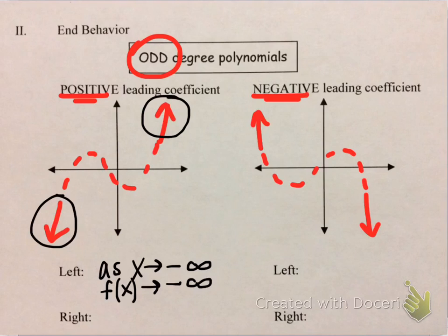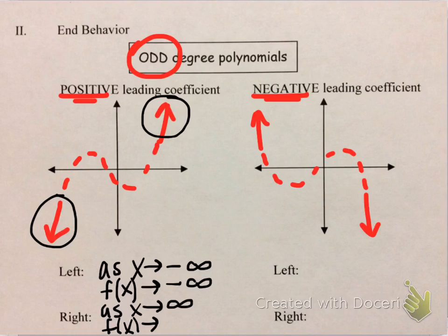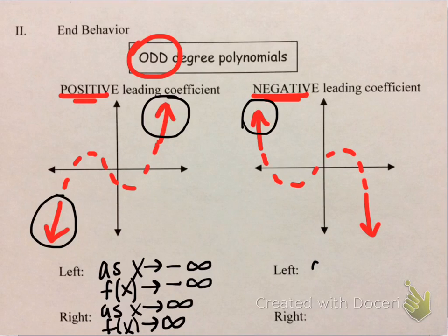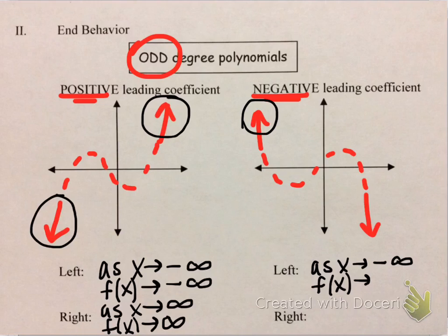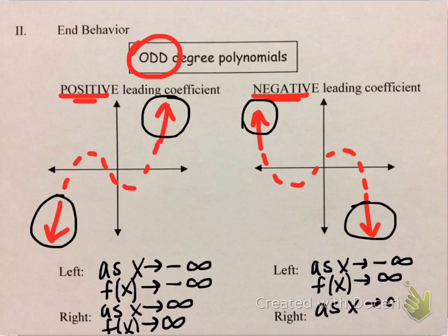For the right behavior, the graph is pointing up, so as x approaches positive infinity, f of x also approaches positive infinity. That's end behavior written with arrow notation. For the graph with a negative leading coefficient: the left behavior shows the left side rising, so as x approaches negative infinity, f of x approaches positive infinity. The right behavior is as x approaches positive infinity, the y values are going down, so f of x approaches negative infinity.